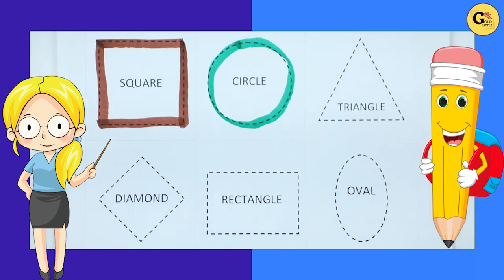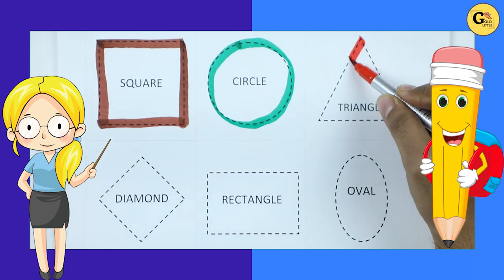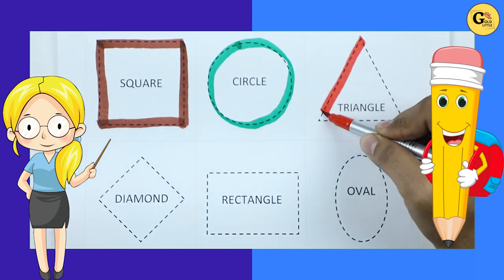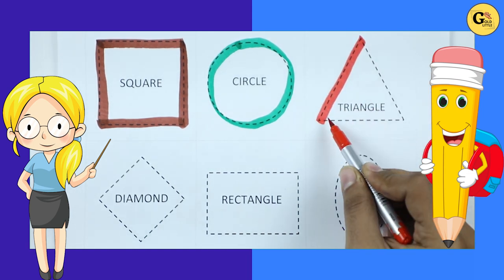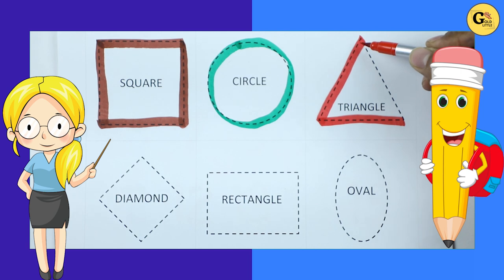Triangle. We make triangle shape with red color. It's triangle.